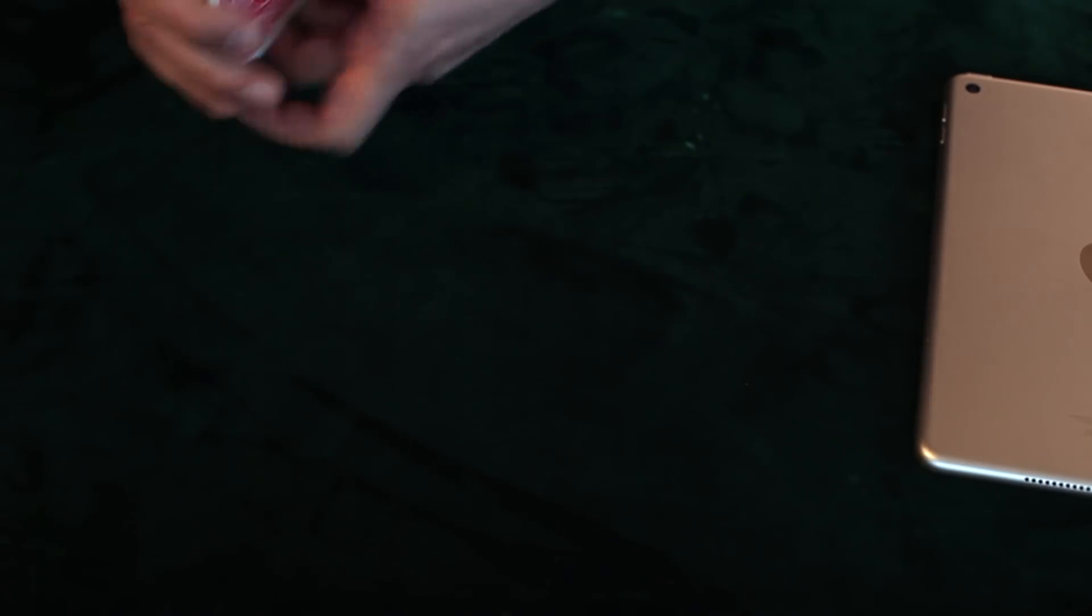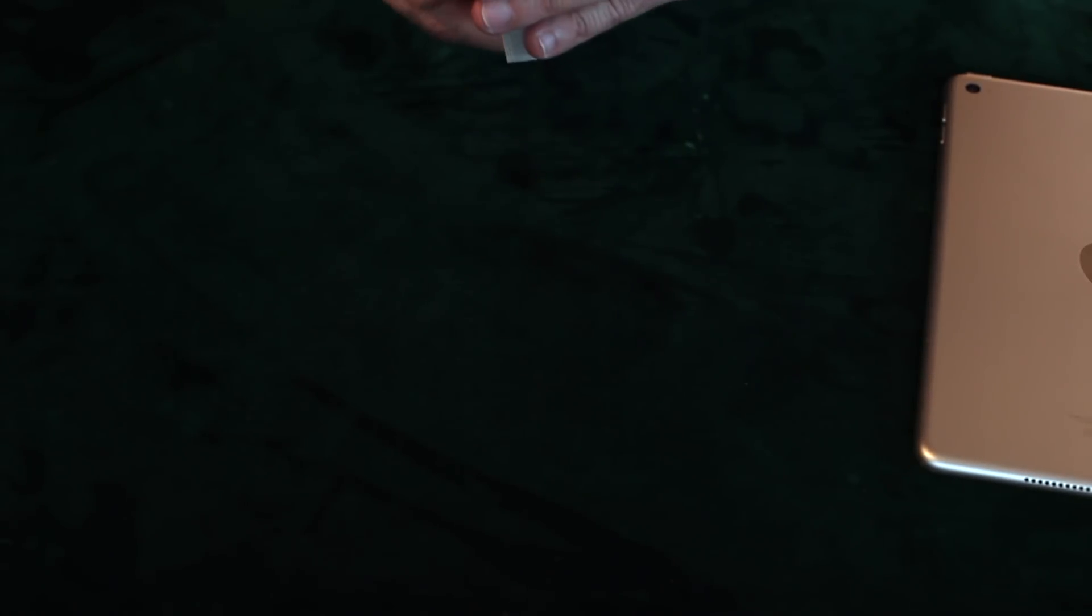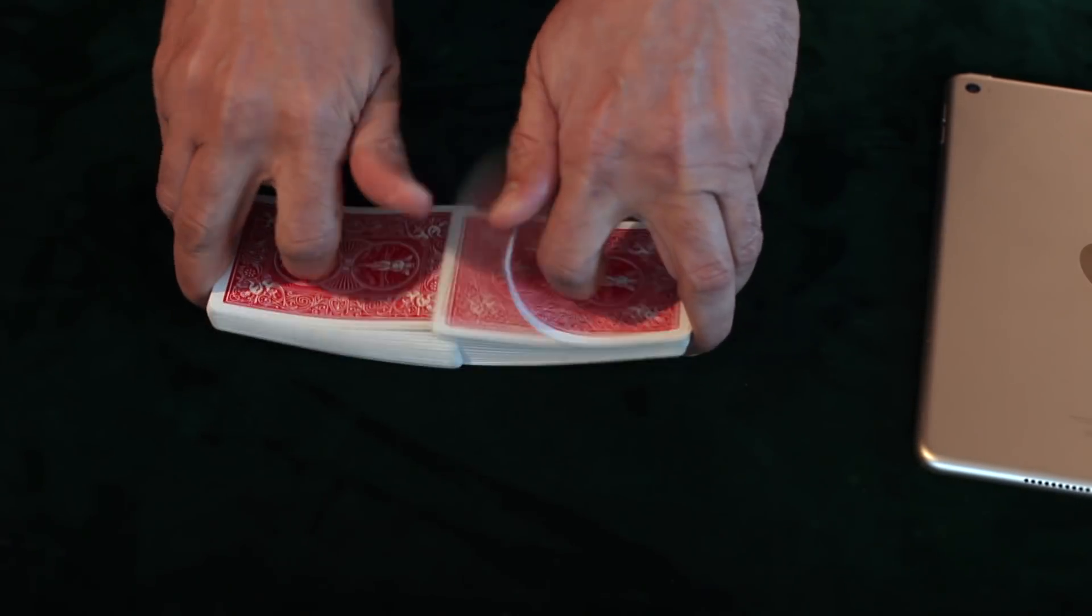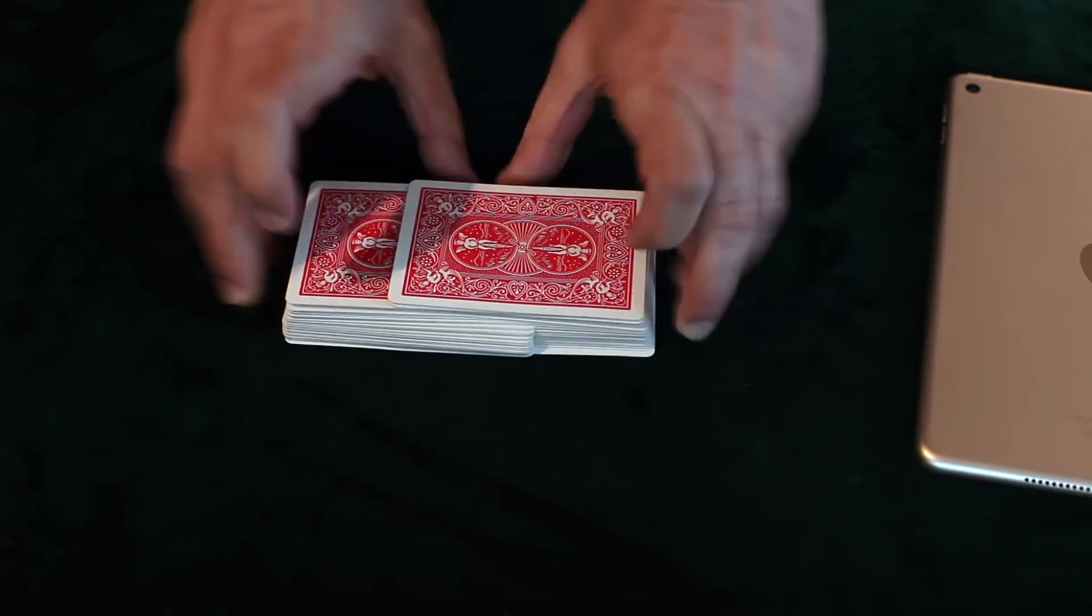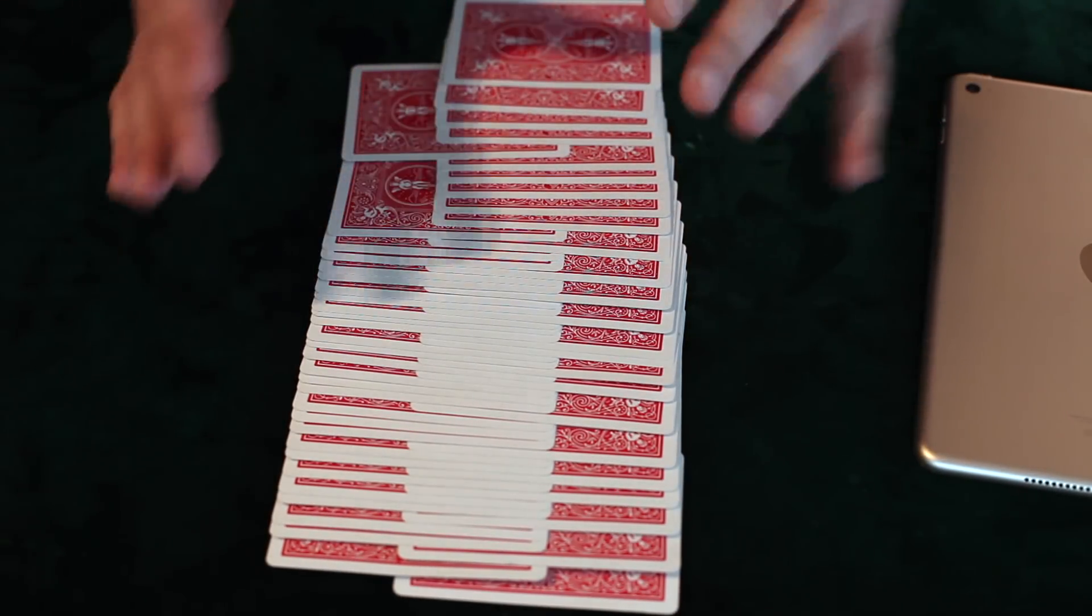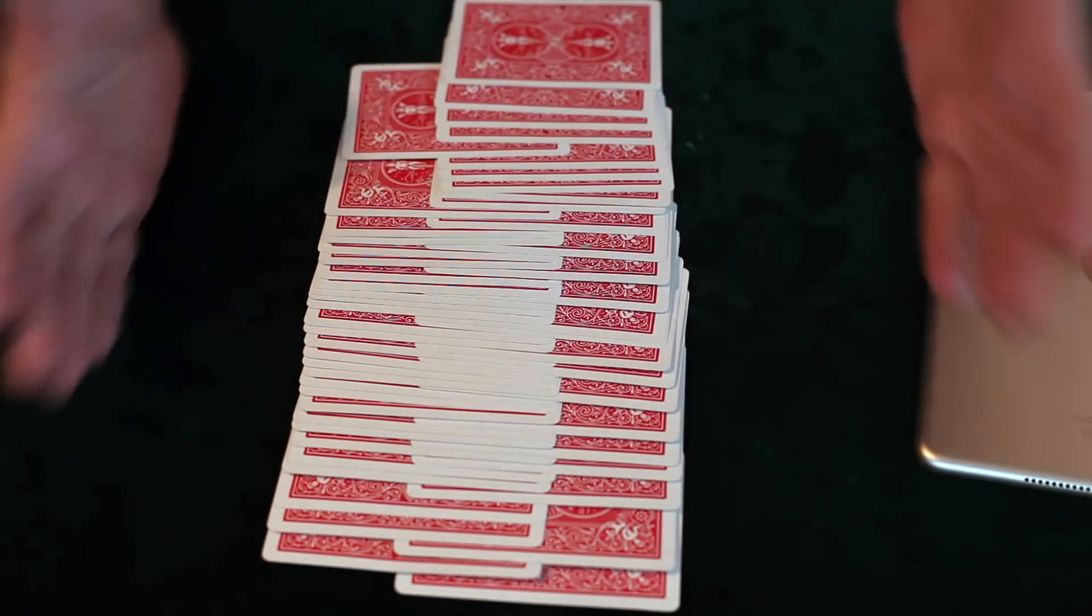Then the magician very openly shuffles the cards in front of the spectator. Usually when magicians shuffle cards like this, that's a riffle shuffle. But instead of pushing it in all the way, you want to spread them out like this so that everybody can see that the cards truly are intertwined within one another.